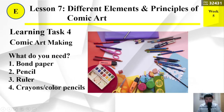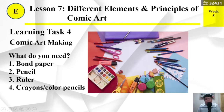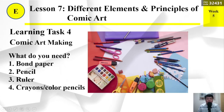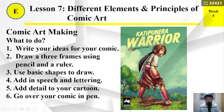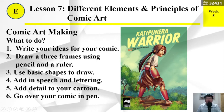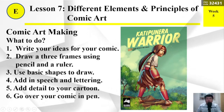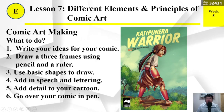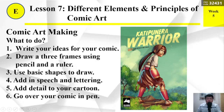Learning Task number 4 — Comic Art Making. What do you need: Number 1: paper; Number 2: pencil; Number 3: ruler; Number 4: crayons or colored pencil. What to do: Number 1: Write your ideas for your comic. Number 2: Draw three frames using pencil and a ruler. Number 3: Use basic shapes to draw. Number 4: Add in speech and lettering. Number 5: Add detail to your cartoon. Number 6: Go over your comic in pen.